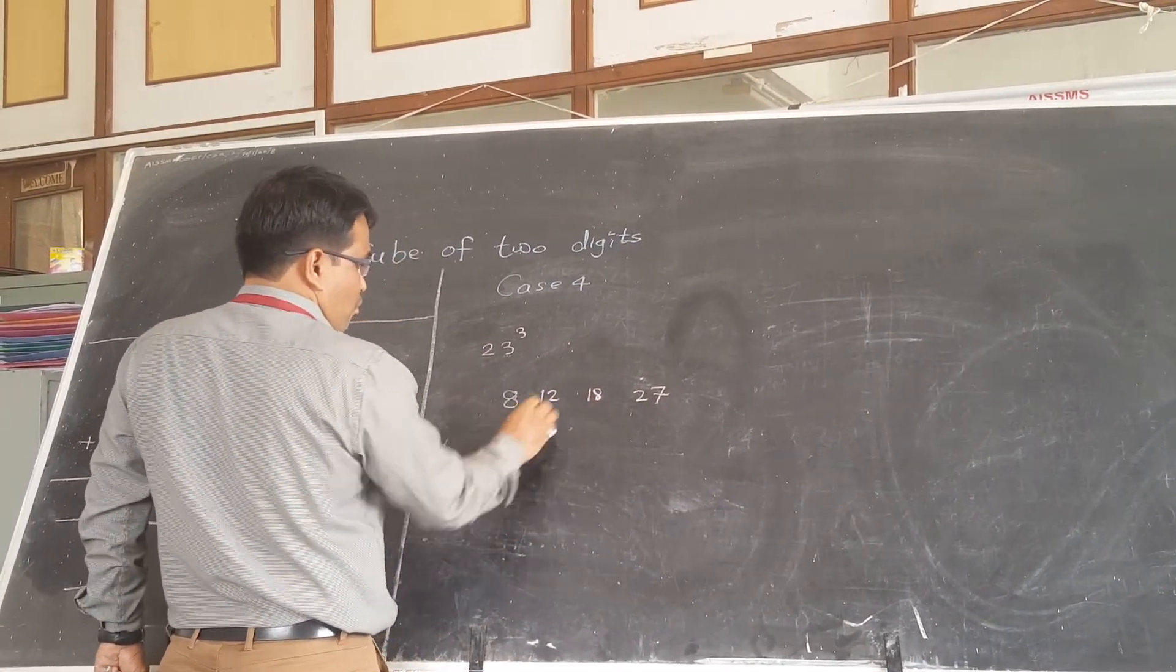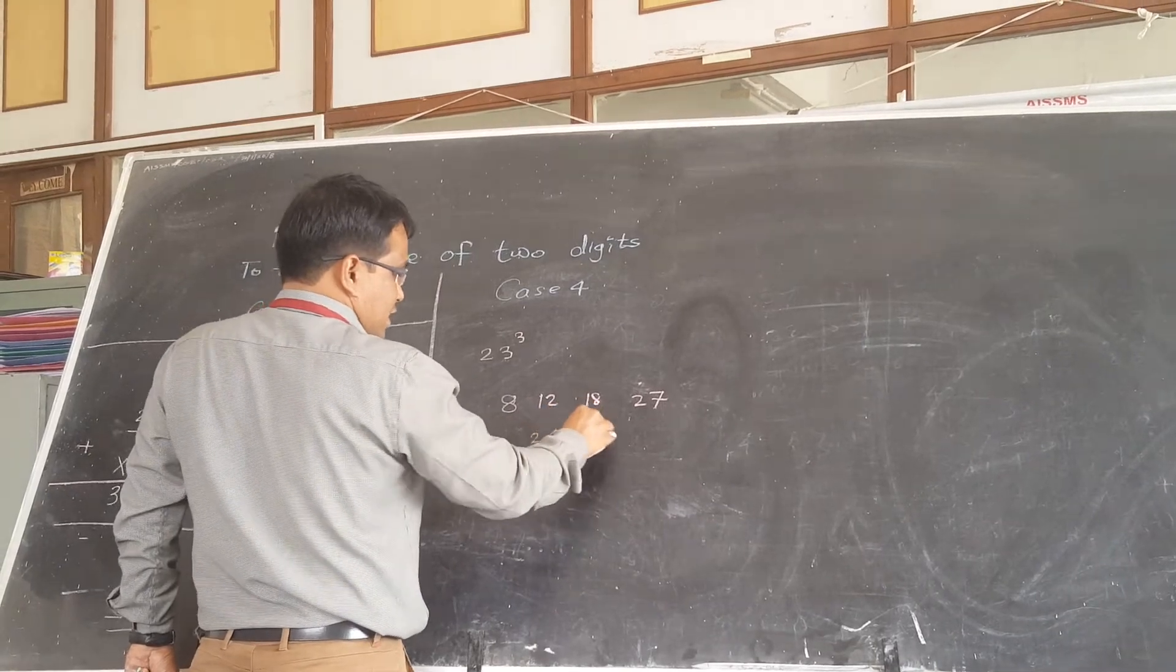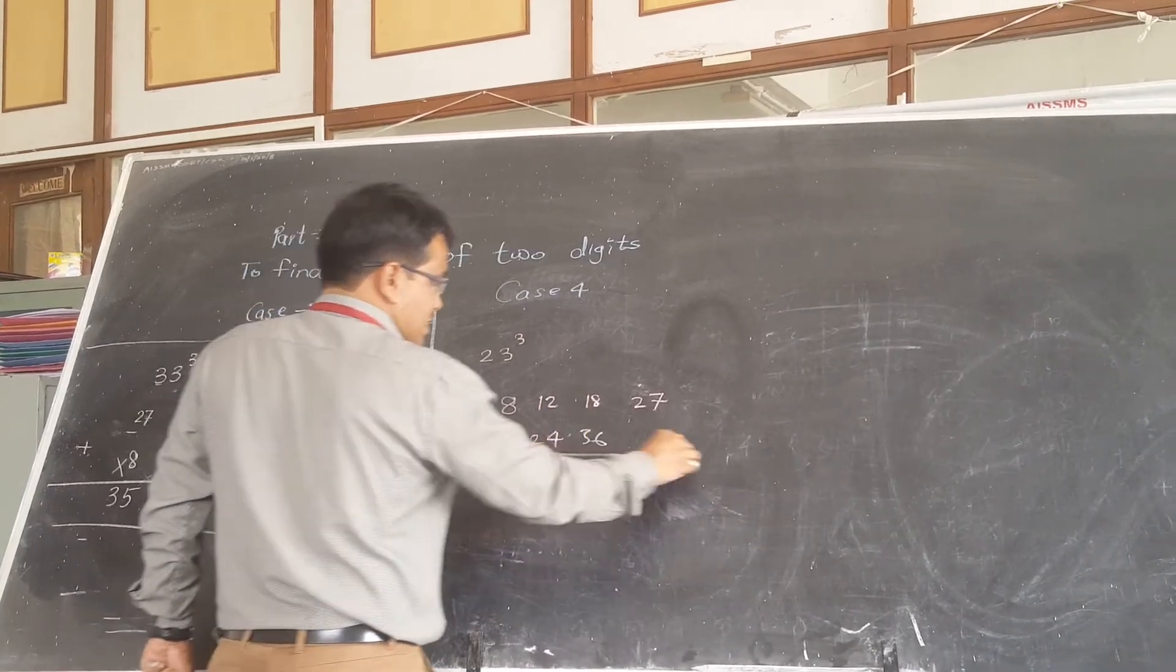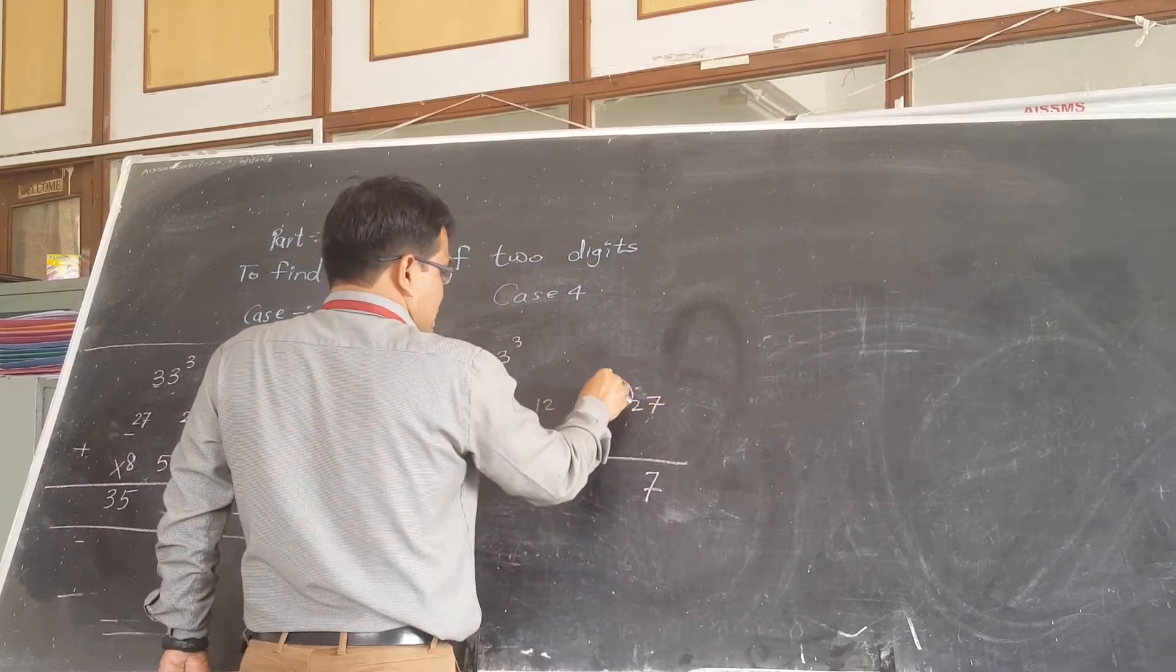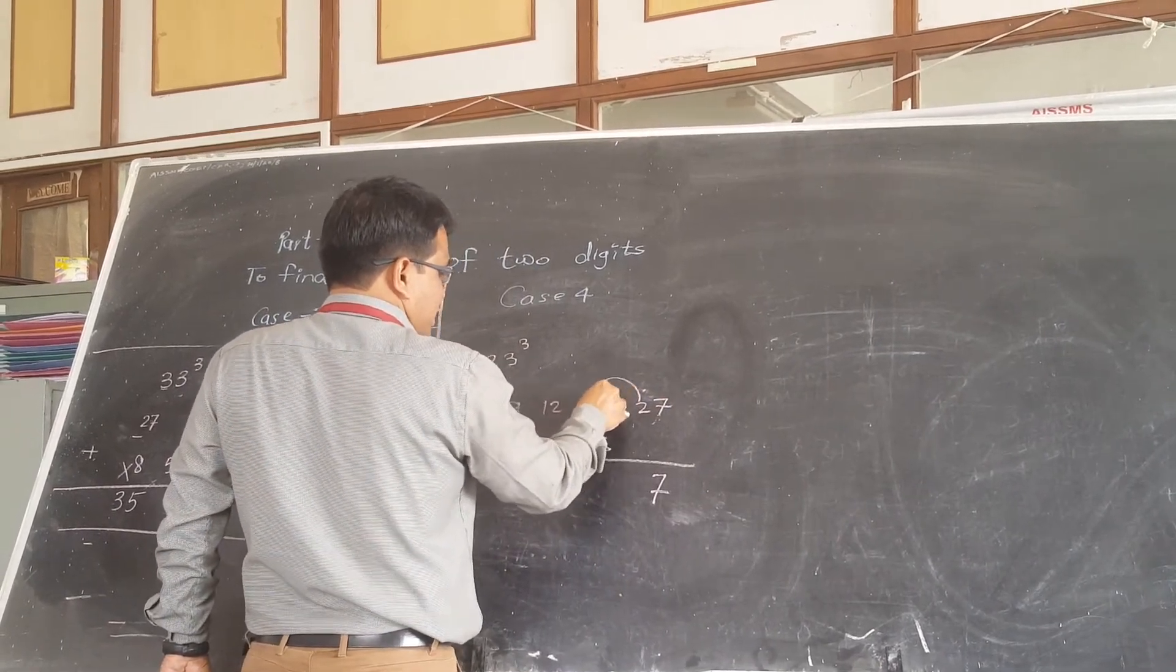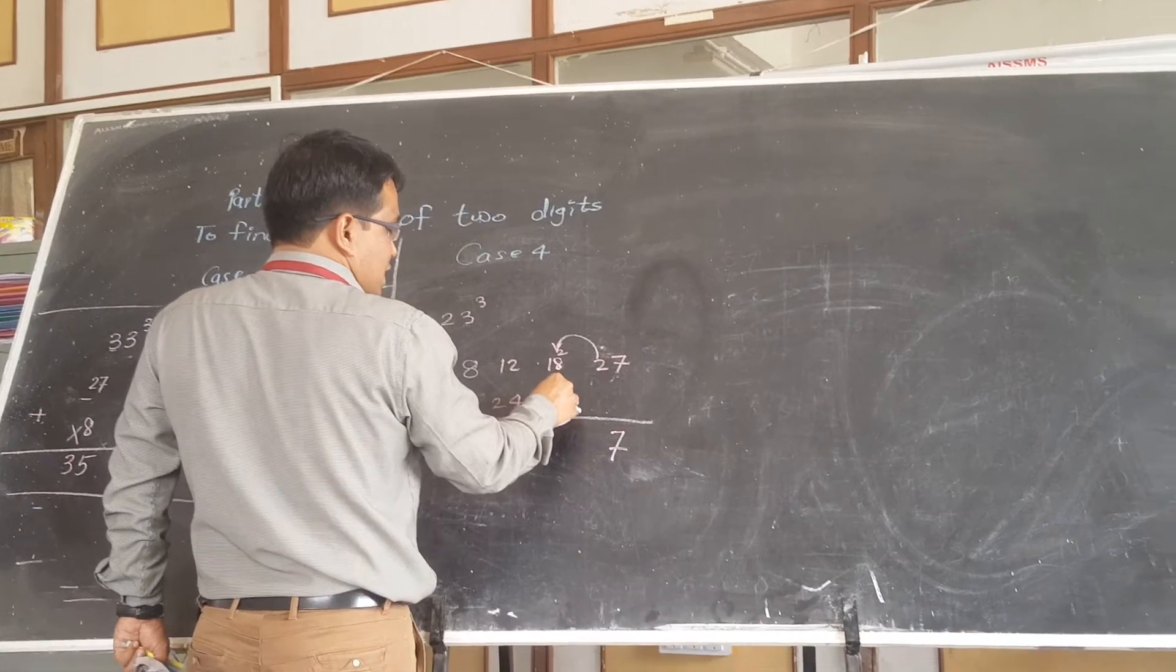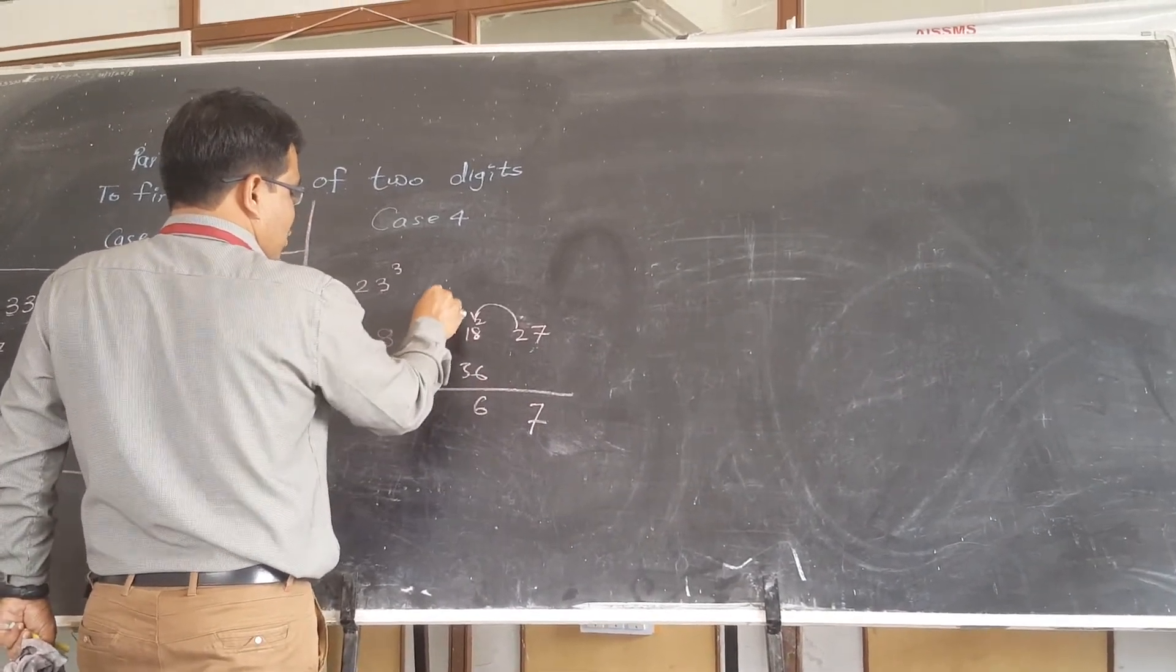Then double this, add this. Here I am going to write only 7, this 2 is going to be carried forward here. 18 plus 20, 20 plus 36, 56. 5 is carried forward.